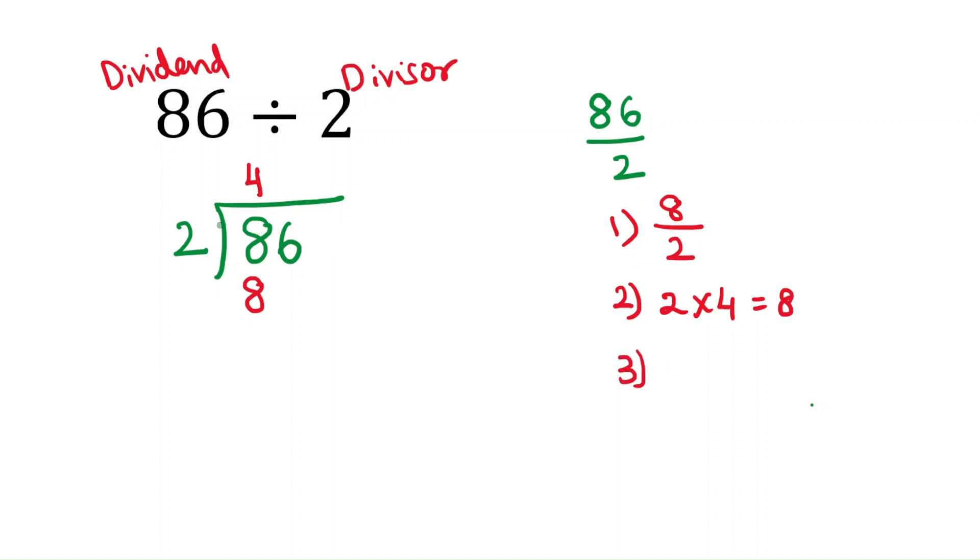And the third step is subtract. Subtract 8 minus 8 that is 0. And the fourth step is bring down. The next digit should be brought down. So here we are bringing down 6.